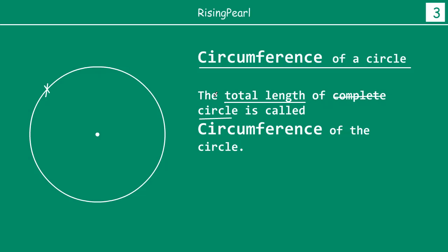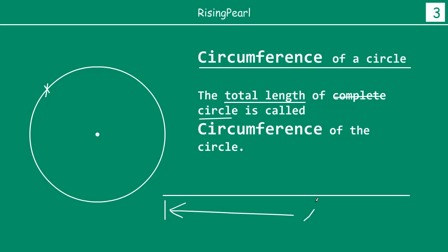So again, you take a thread, you walk over the circle till you get back to the same point with your thread. Then you straighten the thread out like this, and this entire length — let's call this L — is the length of the thread. That is, the circle is this long, even though the shape is obviously round and it's a circle with center O. Circumference is the total length of the circle.